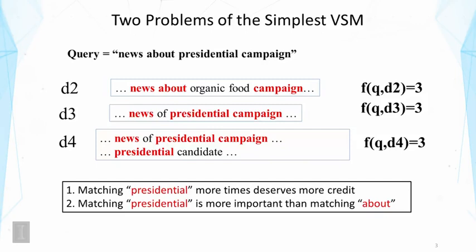But intuitively, we would like D4 to be ranked above D3, and D2 is really non-relevant. So the problem here is that this function couldn't capture the following heuristics. First, we would like to give more credit to D4 because it matched presidential more times than D3. Second, intuitively matching presidential should be more important than matching about because about is a very common word that occurs everywhere. It doesn't really carry that much content. So in this lecture, let's see how we can improve the model to solve these two problems.